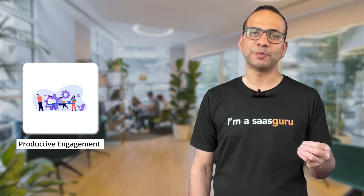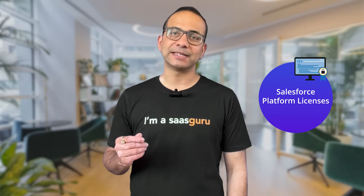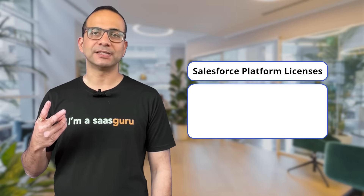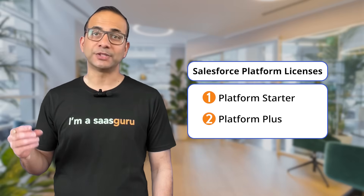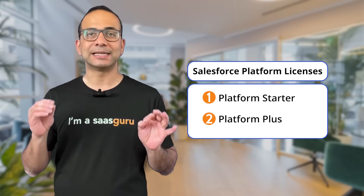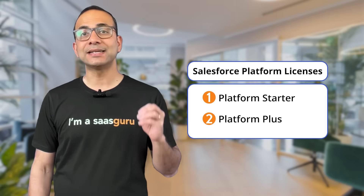These licenses open new avenues for productive engagement while maintaining data integrity and security. Salesforce platform licenses permit access to core platform functionality and are focused on custom development and access to custom objects. Salesforce offers two types of platform licenses: Platform Starter, formerly known as Lightning Platform, with access to 10 custom objects, and Platform Plus, formerly known as Lightning Platform Plus, with access to 110 custom objects.